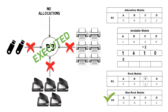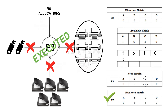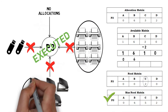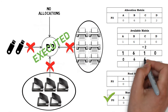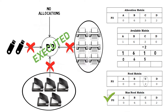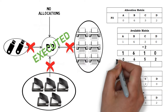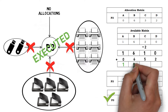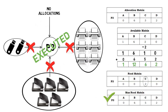It has no instance of resource A, so 0. Then it will release 6 instances of resource B, 5 instances of resource C, and 2 instances of resource D. So the available matrix will get updated. It will be 1, 12, 6, and 2.